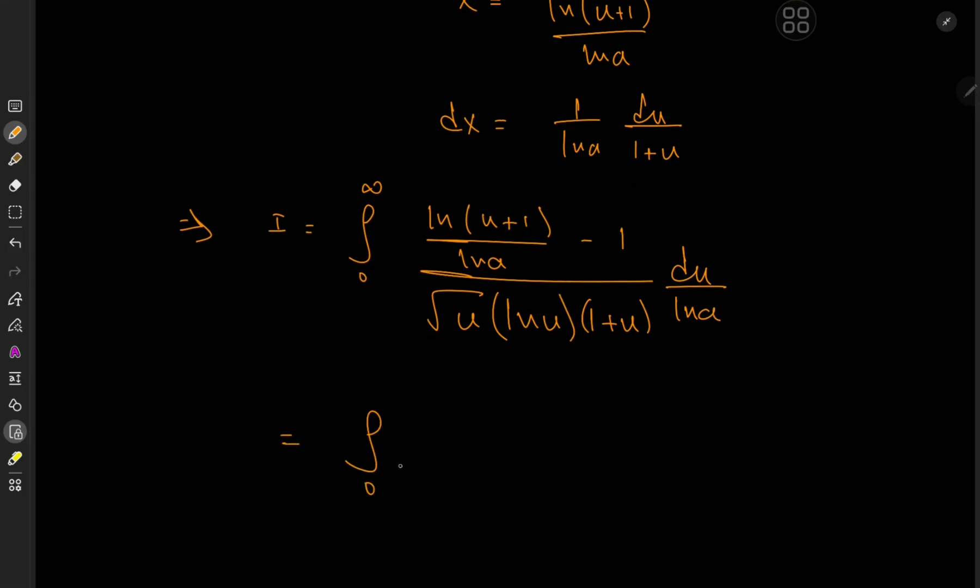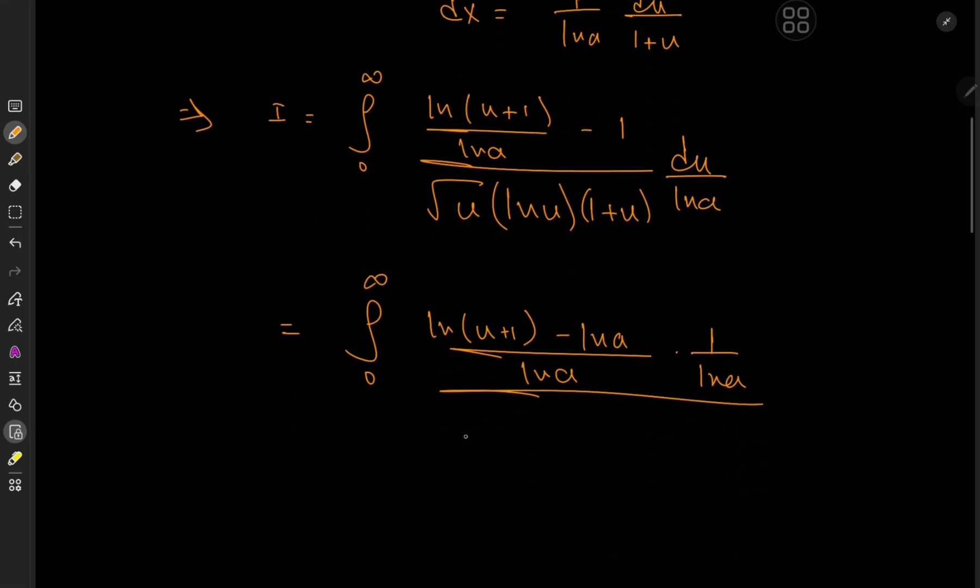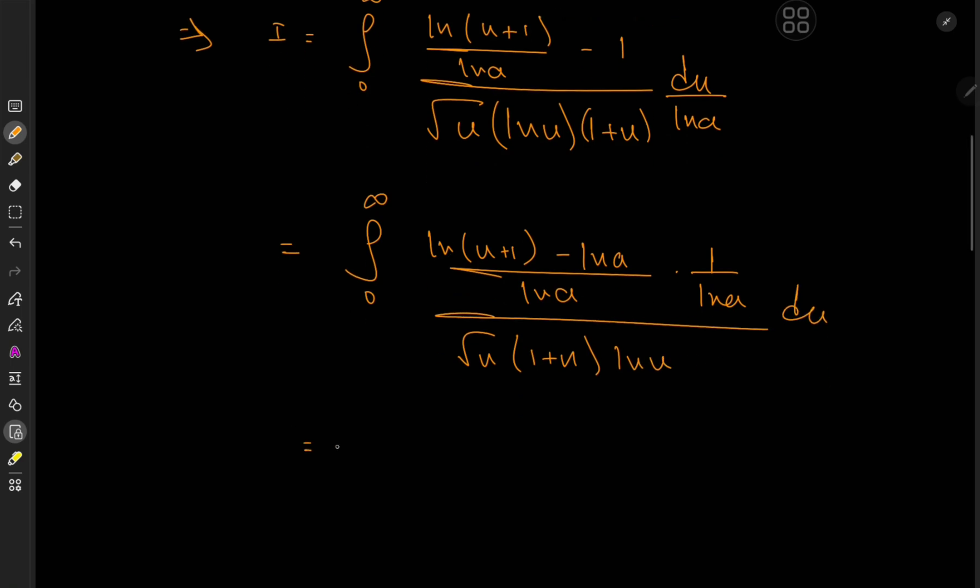So I'm going to simplify the numerator a bit, write this as integral 0 to infinity, log(u + 1) minus log(a) over log(a) times 1 over log(a), over root u times (1 + u) times log(u) du. So that means I can just factor out this 1 over log squared a term, and I have the integral from 0 to infinity of log(u + 1) minus log(a) can be expanded out as log of (1 + u)/a divided by root u times (1 + u) times log(u) du.